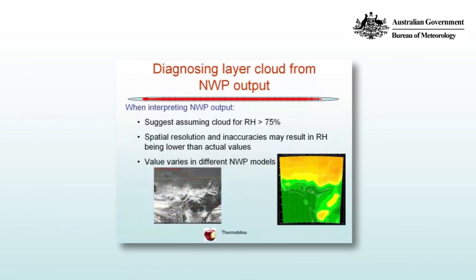Finally, when diagnosing layer cloud from numerical weather prediction output, we typically use a relative humidity threshold of greater than 75%. A comparison between a visual satellite image and a relative humidity field at 900 hectopascals illustrates this. Remember that models aren't perfect — there will be spatial resolution issues and inaccuracies that can produce relative humidity values lower than actual. Moisture is a tricky parameter to accurately represent in a model, and values also vary between different NWP models. Use 75% as a first guess when evaluating model output, and always ground-truth the model against what's happening in the real atmosphere.